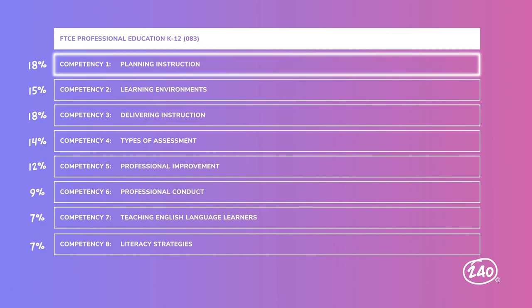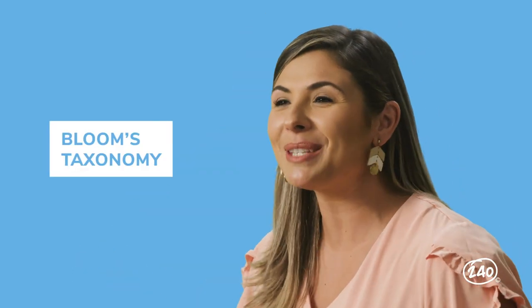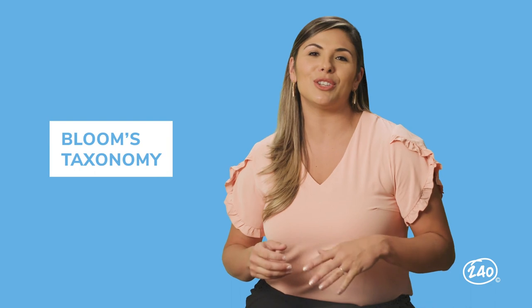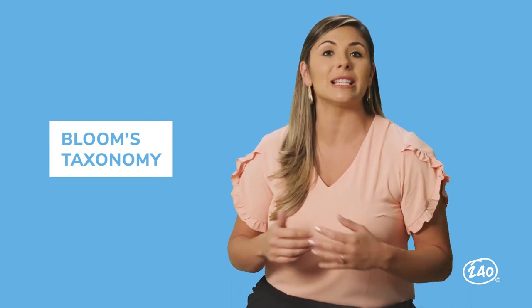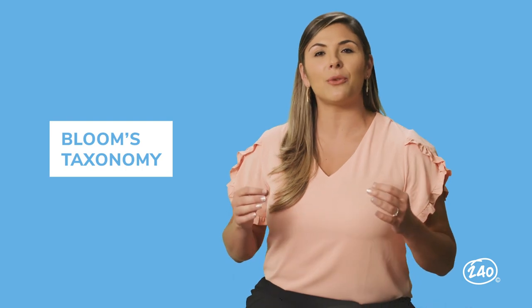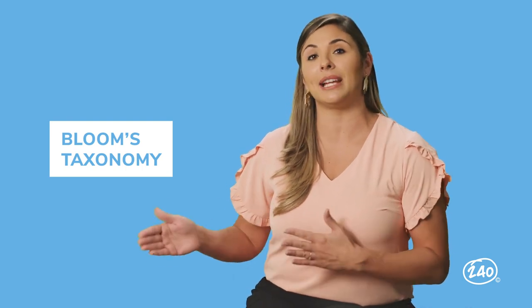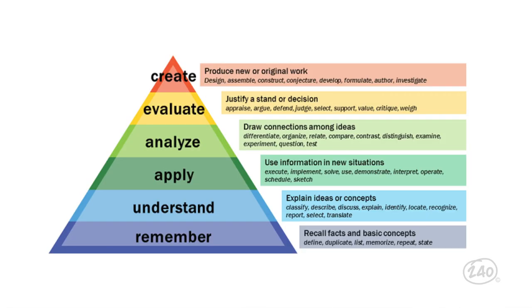Let's discuss competency one, which is all about designing and planning instruction. Do you know a great way to help your students bloom into stronger thinkers? Using Bloom's Taxonomy. Bloom's Taxonomy is used to classify educational learning objectives into levels of complexity and specificity. It provides a framework for educators as they plan their lessons. The levels are modeled as a pyramid, starting with foundational skills at the base and increasing in rigor as they work their way up that particular skill or concept.